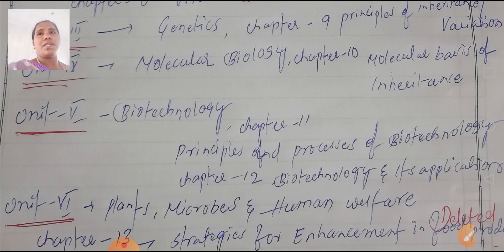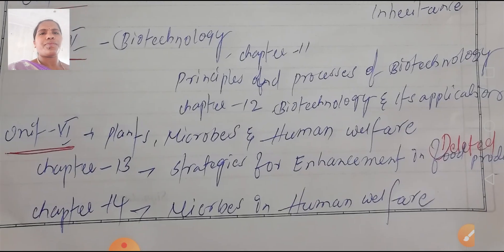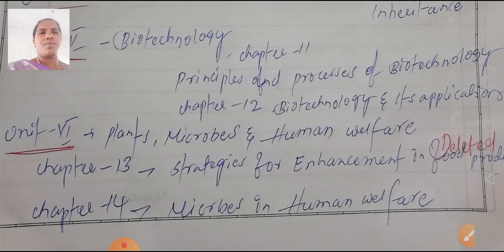Three units — Genetics, Molecular Biology, and Biotechnology — are very important. Unit 6 is Plants, Microbes and Human Welfare.